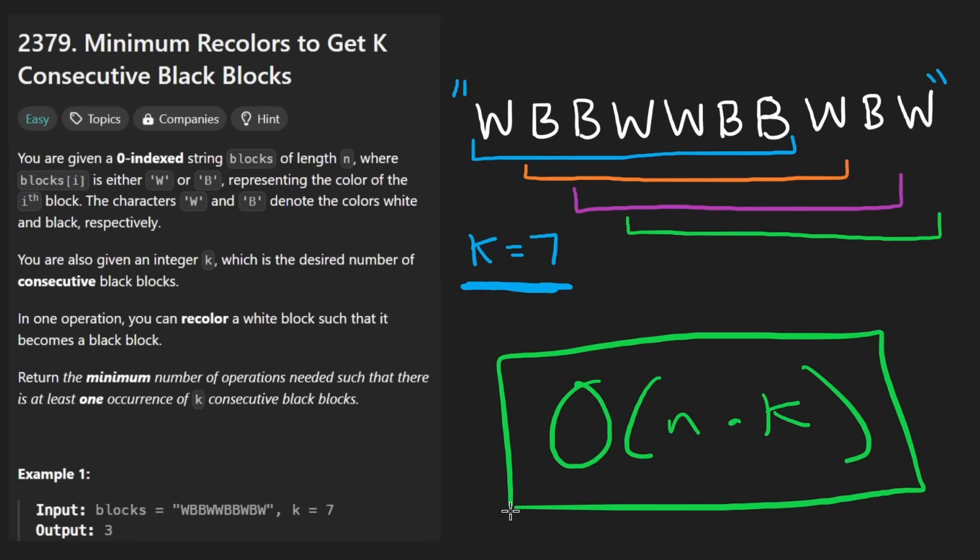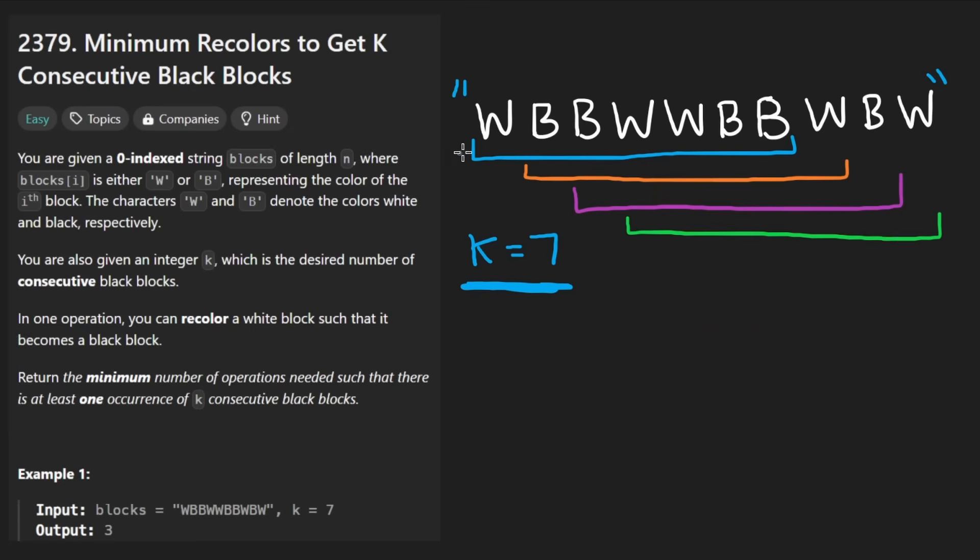Roughly there could be like n different subarrays, so that's going to be O of n. And the size of each subarray is going to be k, so n times k I guess that would be the brute force. But think about this, what is the brute force going to actually involve?